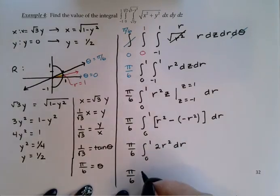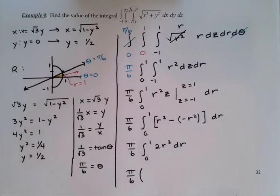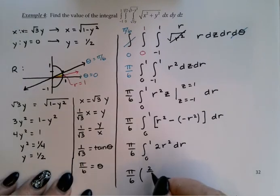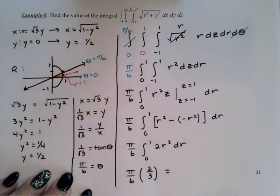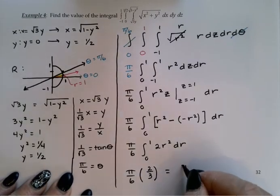Last integral, so I'm going to run it on the calculator just to save me a little bit of time. And when I did that, I got 2-thirds. So pi-over-sixths times 2-thirds simplifies to pi-over-nine.